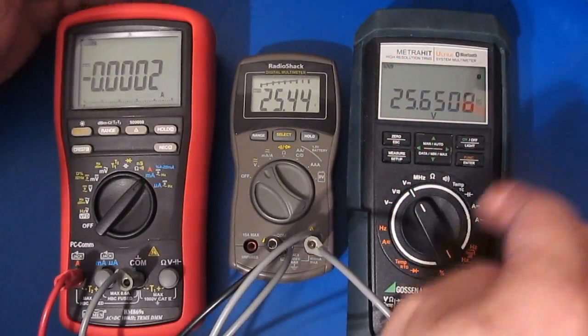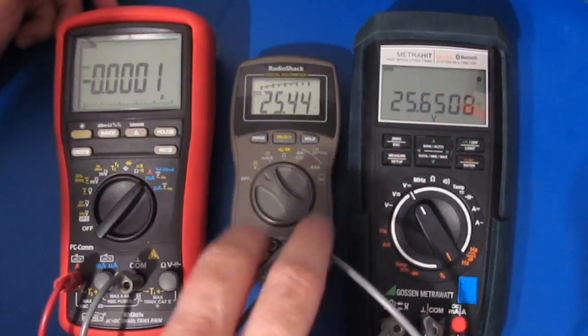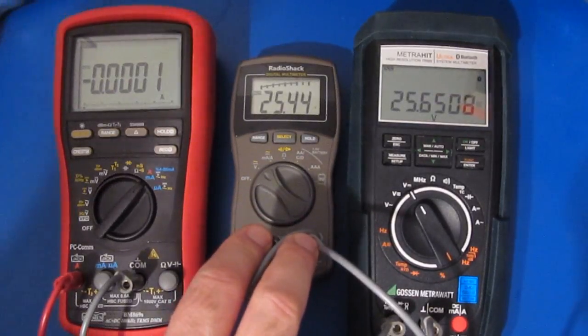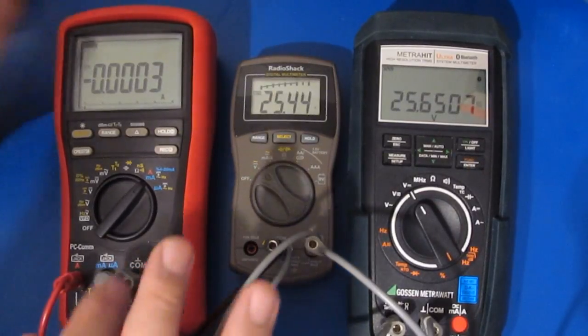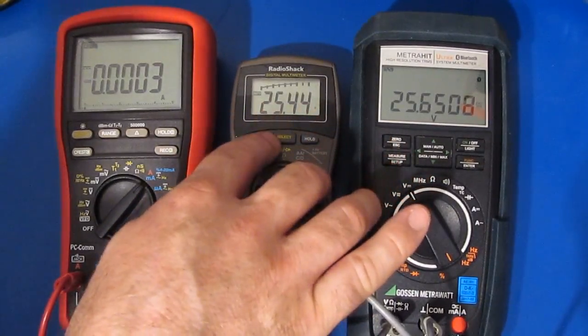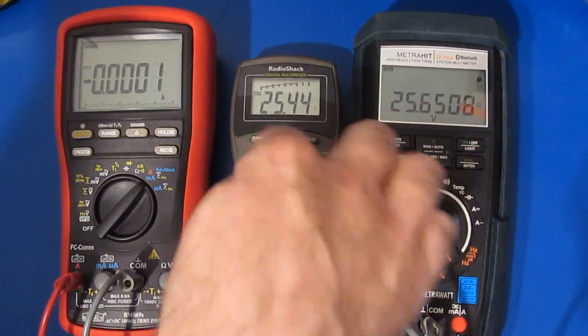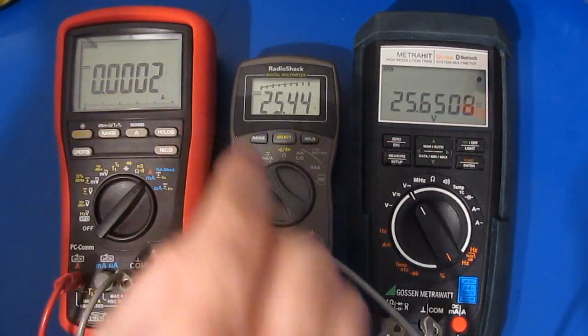So what I've done here is I've attached our Gossan MetroWatt looking directly across the inputs of the RadioShack meter. And then this Brymen meter is attached in series with it. So you can see I'm currently applying basically 25 volts and the meter isn't drawing any current.